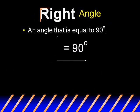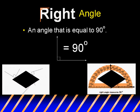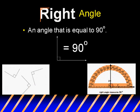A right angle is an angle that is equal to 90 degrees. The little square in the vertex of the angle indicates perpendicular lines that make the 90-degree angle. Here are some examples of 90-degree angles.